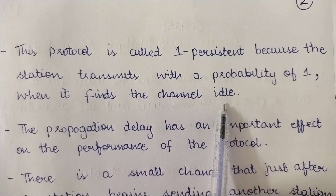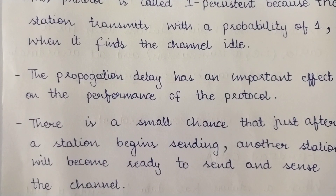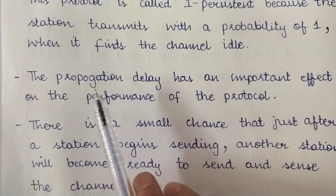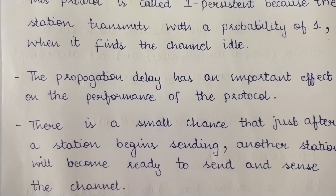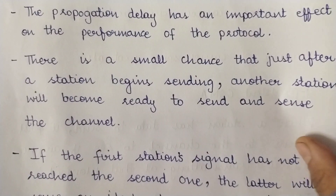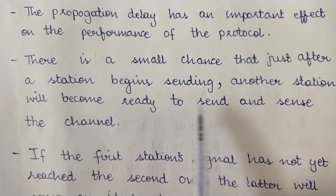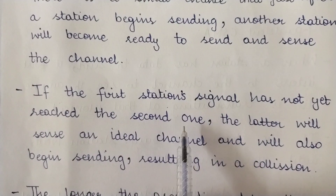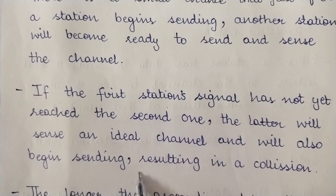Propagation delay is the delay it takes for the transmission of data from the sender to the receiver, and it has an important effect on the performance of this protocol. There is a small chance that just after a station begins sending, another station will become ready to send and sense the channel. If the first station's signal has not yet reached the second one, the second station will sense an idle channel and also begin sending.